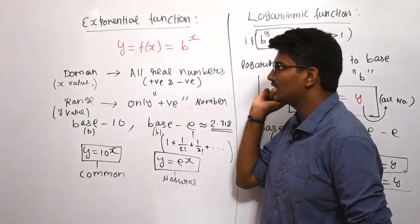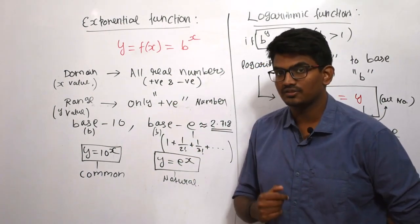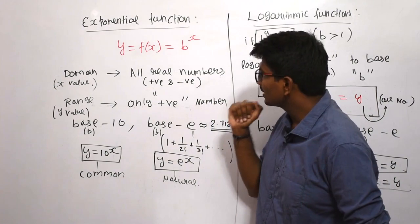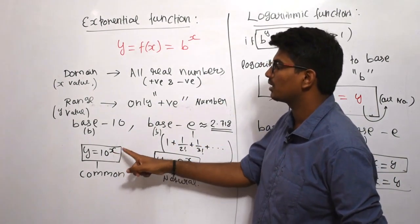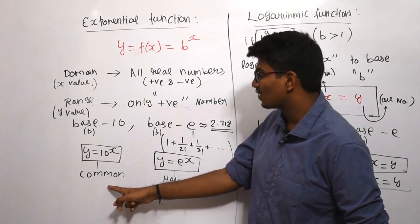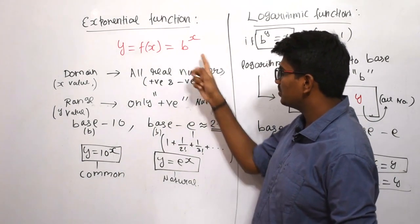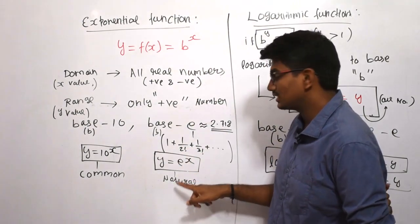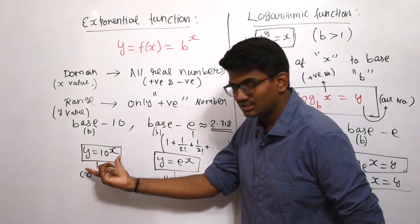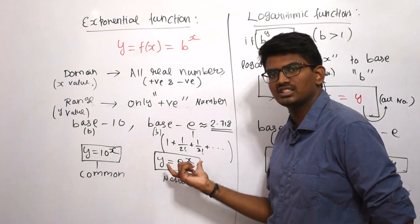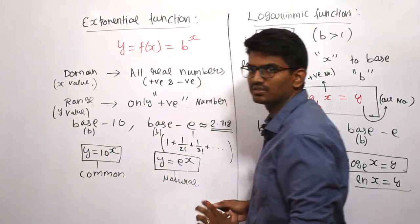e to the power of x being the only exponential function is the common misconception most students face. If in the base b we substitute 10, that is 10 to the power of x, it is called the common exponential function. And in place of b if we substitute e, then it is the natural exponential function. So there is a difference — both are exponential functions, one is natural and one is common.